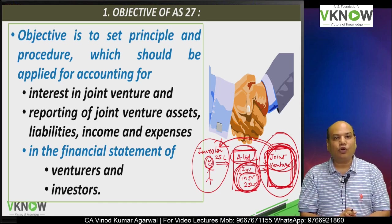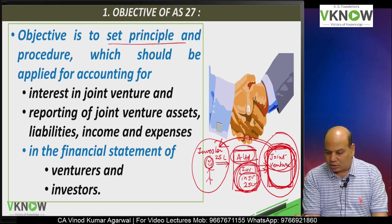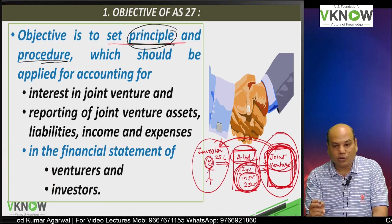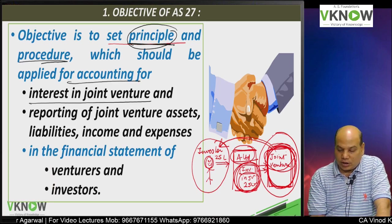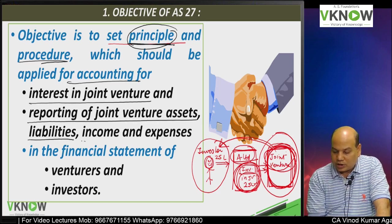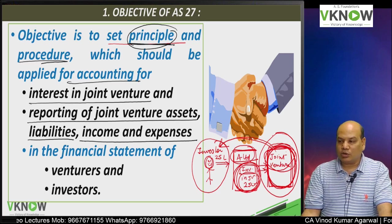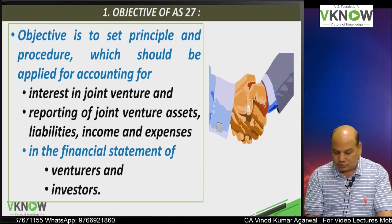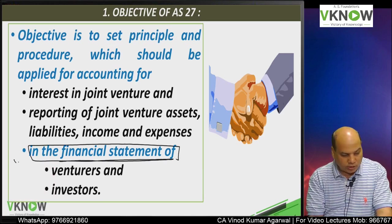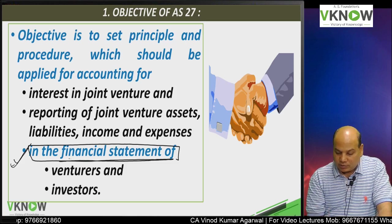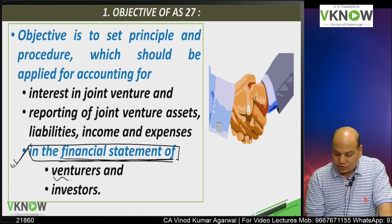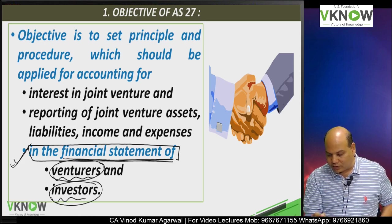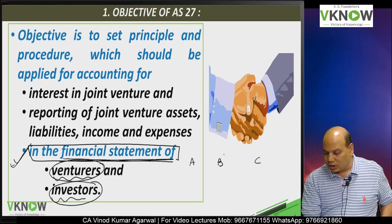Let us read the objective of AS 27. The objective, like all other standards, is to set out the principles — what procedure you will follow for accounting of your interest in joint venture, and how to report joint venture asset, liability, income, and expense. How to record your share in asset, liability, income, and expense of joint venture is covered by this standard. This standard is applicable in the financial statements of two parties — venturer and investor.